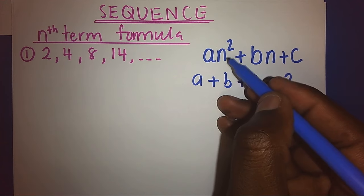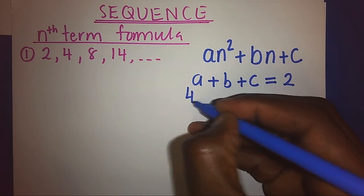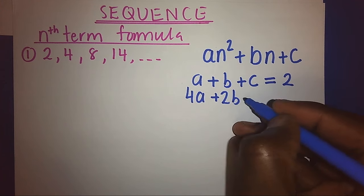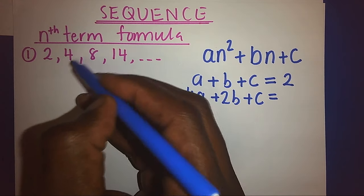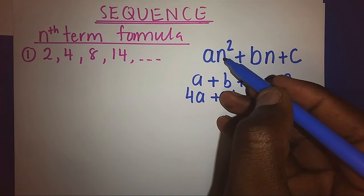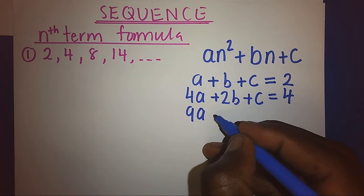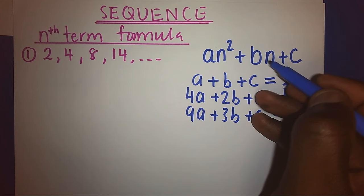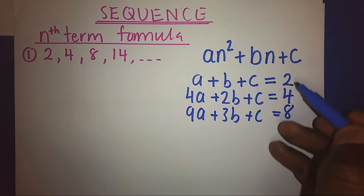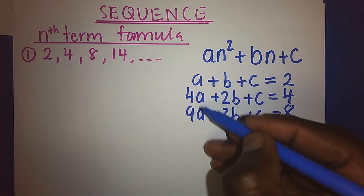And when I need the second term, I have to make n=2. When n=2, 2 squared will be 4, so I will have 4a + 2b + c, and remember I should get my second term, which is 4. For the third term, I make n=3. When n=3, 3 squared is 9, so I get 9a + 3b + c. Remember, when n=3, I'm looking for the third term, and my third term is 8.